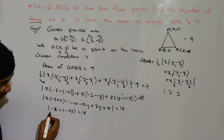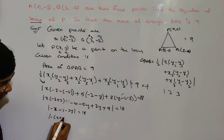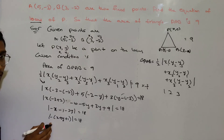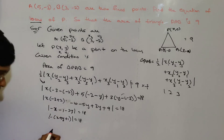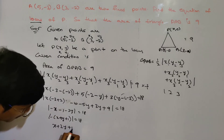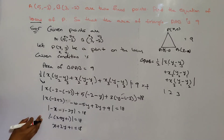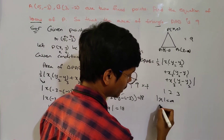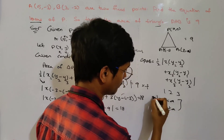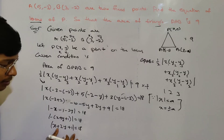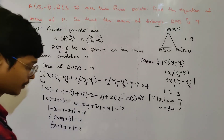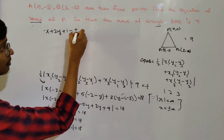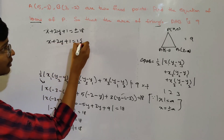So, taking common terms: minus x plus 2y plus 1 equals 18. Removing the modulus, we use the property: mod(x) = a means x = ±a. So x plus 2y plus 1 equals plus or minus 18.